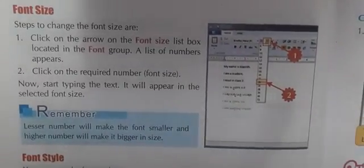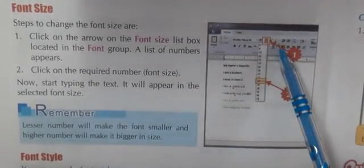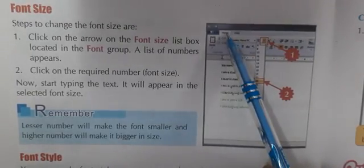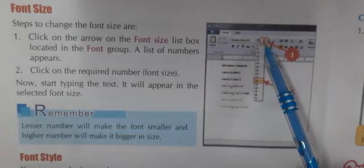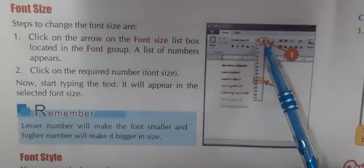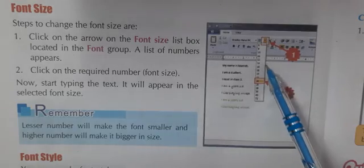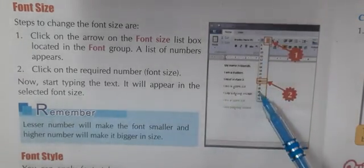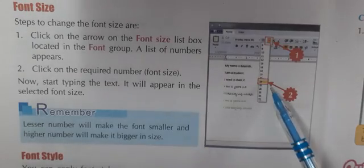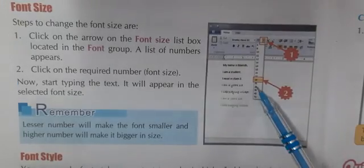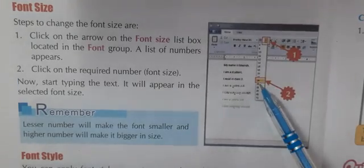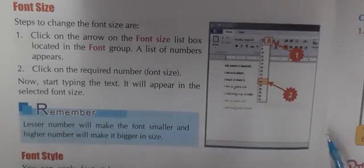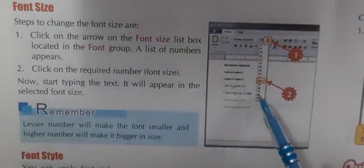How can we change the font size? In the WordPad window, first we will go to the Home tab. Then from the font group we will click on the font size list box — you can see the drop-down arrow. We will click on the drop-down arrow. If you want to increase the size of the word, we will select a bigger number, and if you want to make the text small, we can select a smaller number. So we can select any number to make the text big or small — that's how we can change the font size.